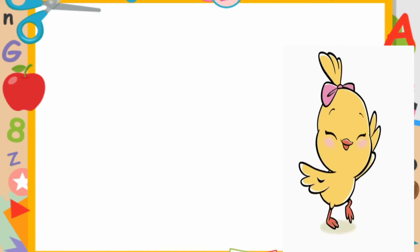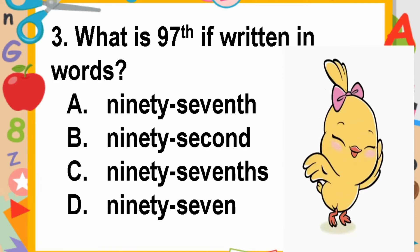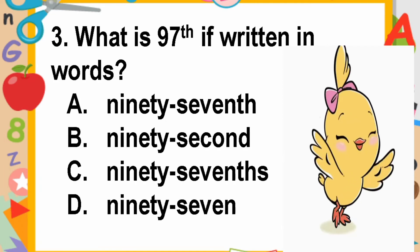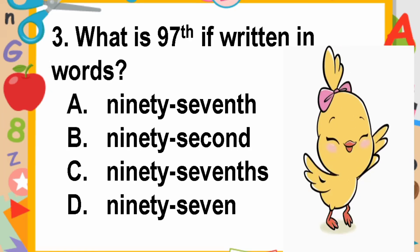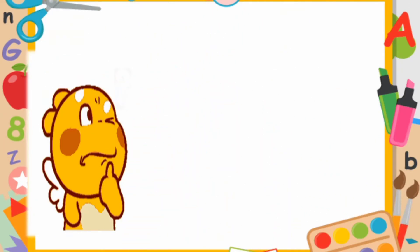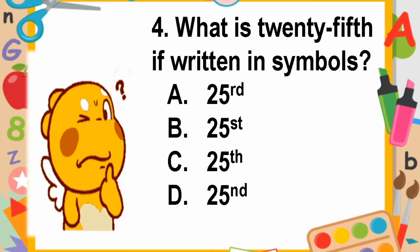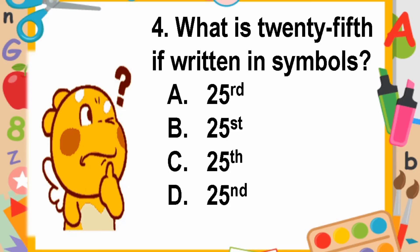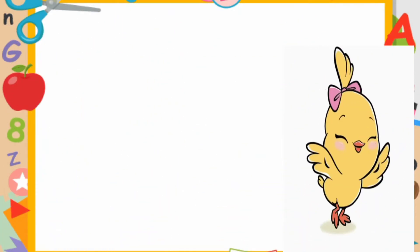For our third question: what is 97th if written in words — A, B, C, or D? Question number four: what is 25th if written in symbols — A, B, C, or D?